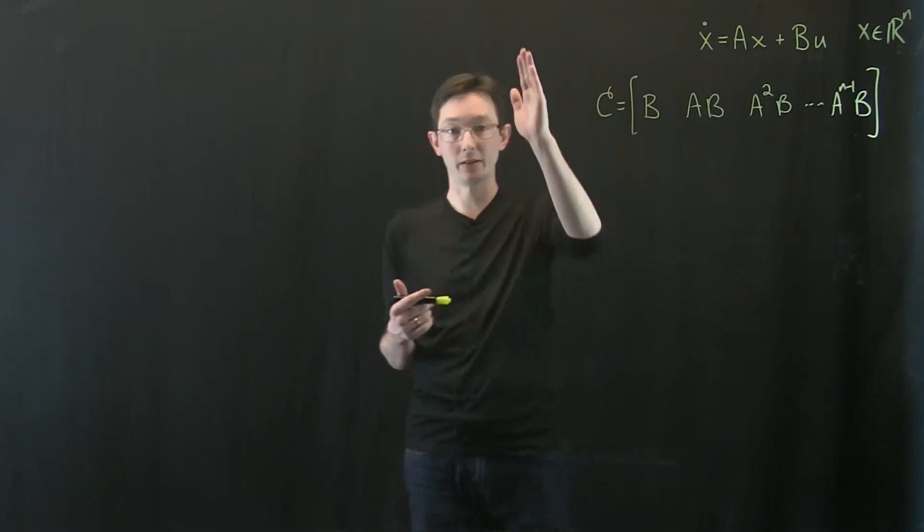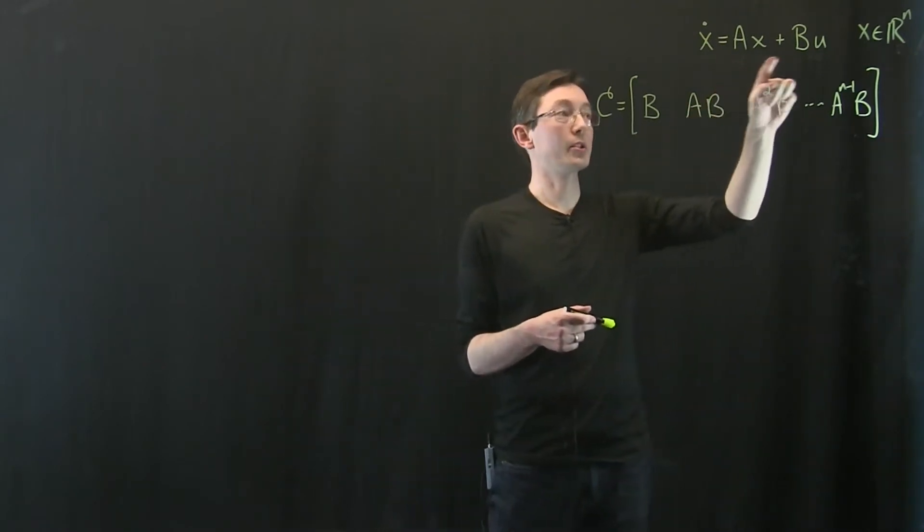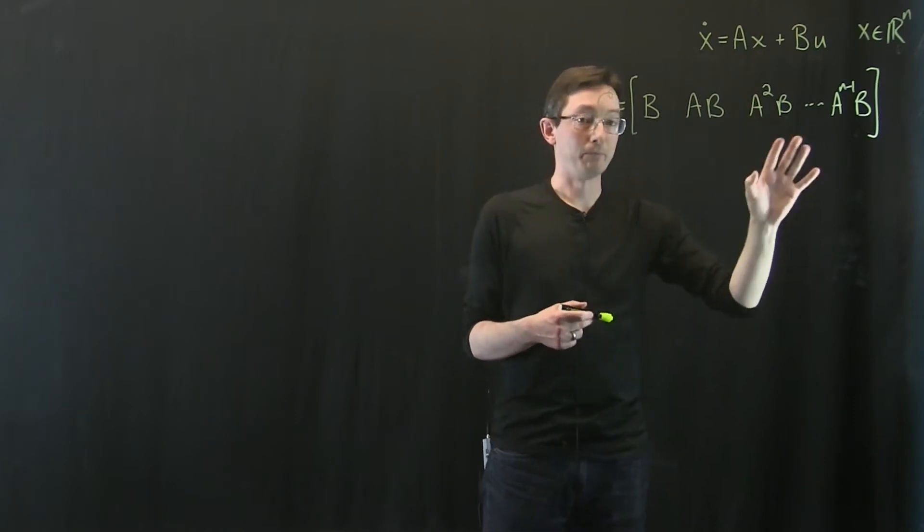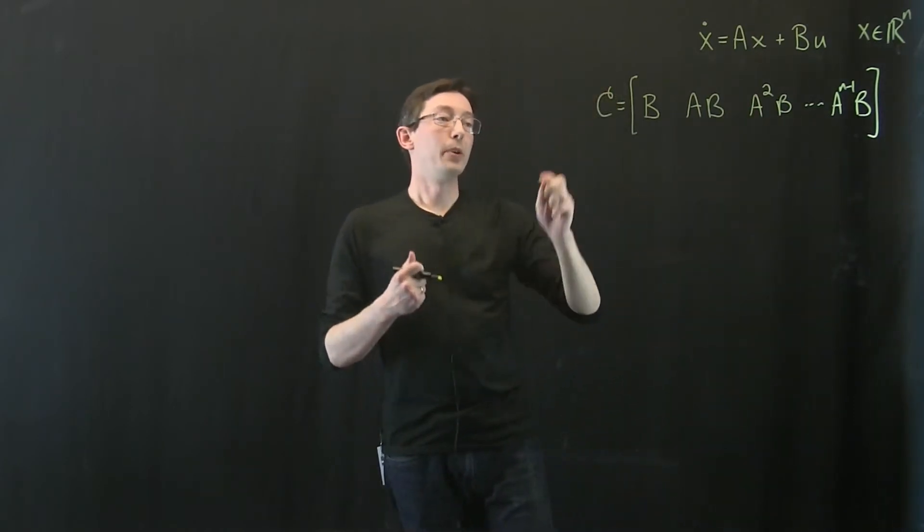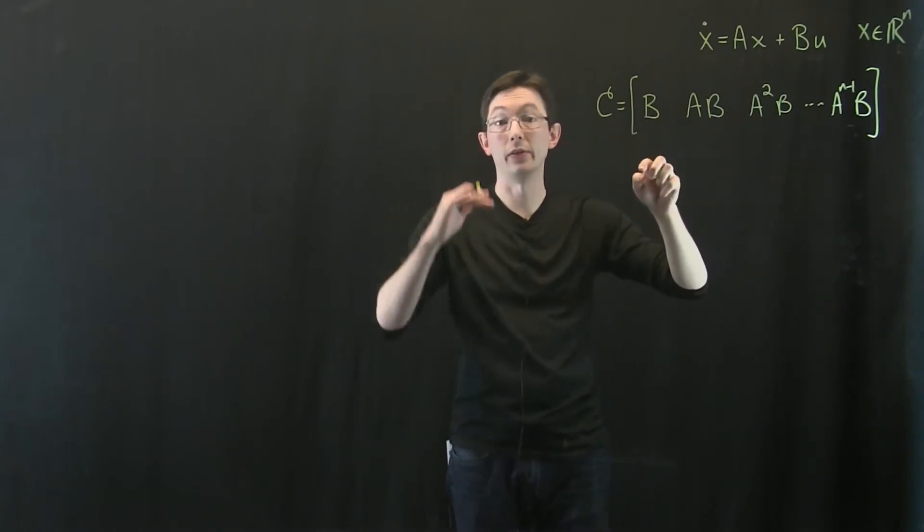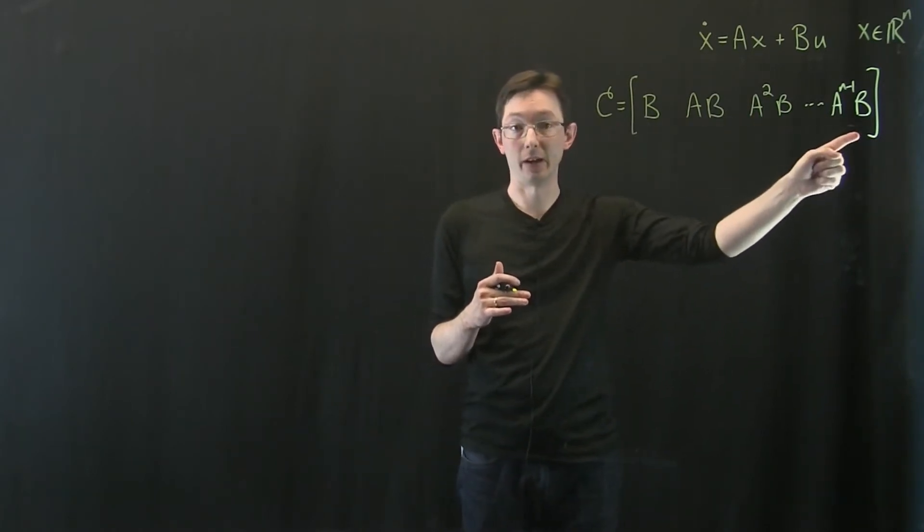It means that I can steer x to any vector in Rn, I can arbitrarily place the eigenvalues of this closed loop system to anywhere I want, but I haven't really shown you why the system is controllable, why all of those things are true if this is full rank.